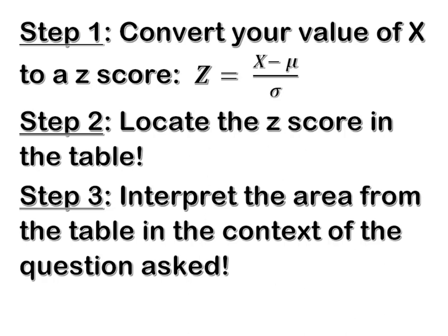First, convert your value of X to a z-score. Locate that z-score in your cumulative distribution table and then interpret the area from the table in the context of the question you've been asked.